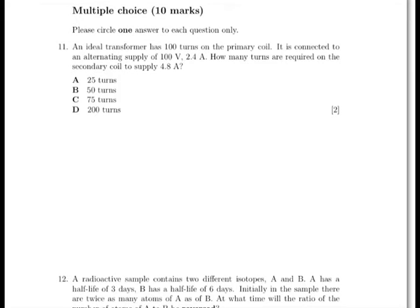For this question we need to use the transformer equation: the number of turns on the primary divided by the number of turns on the secondary equals the voltage on the primary side divided by the voltage on the secondary side.